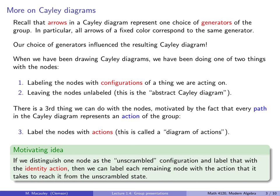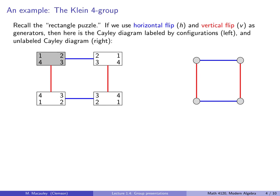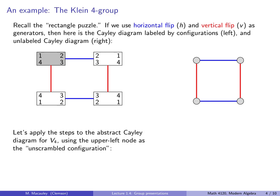Let's do an example. Recall the Klein 4 group, or the rectangle puzzle. If we use a horizontal flip and a vertical flip as generators, then here is the Cayley diagram, labeled by configurations, out here on the left. And here's the unlabeled Cayley diagram on the right. So let's apply the steps to the abstract Cayley diagram for V4 using the upper left-hand node as the unscrambled configuration. Let's label this node with E. And then let's label each of these three nodes with the action that it takes to get here. To get to here, that's the blue arrow, the horizontal flip. So let's call this H. Let's call this one down here V. And let's call this one down here VH.